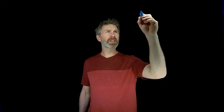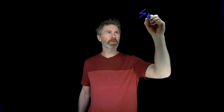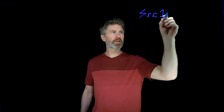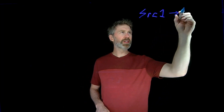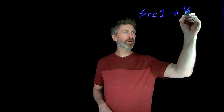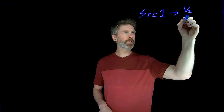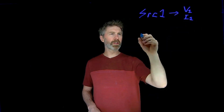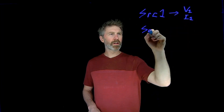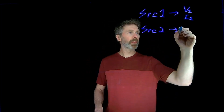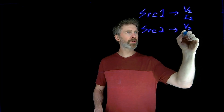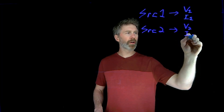More specifically, what that means is in a circuit — let's say you have a random circuit with a couple of sources. If you only have source one, it's going to give you a particular voltage, voltage one, and current one in one of the elements. And if you have only source two connected to the same circuit, it's going to give you voltage two and current two on those same elements.